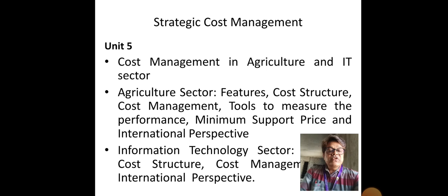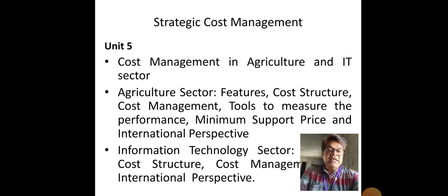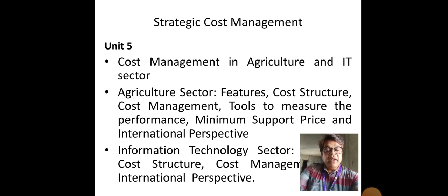First, the agricultural sector. I am focusing on the cost structure of the agricultural sector, just like a normal cost sheet. The cost structure of this sector has three components: cost of material, cost of labour, and cost of land. These three components can each be classified into direct and indirect.